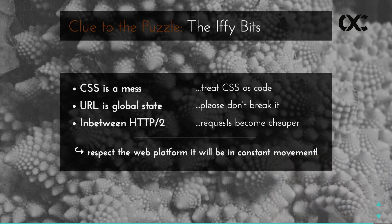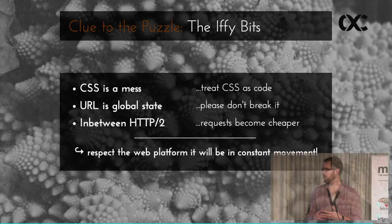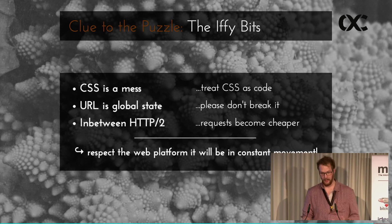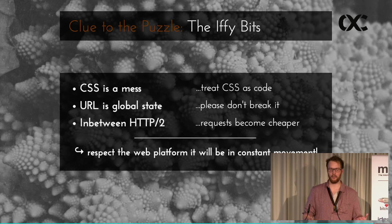There are still some iffy bits to be solved. For us it was CSS, because by its nature it's global and a bit of a mess — the cascade makes it almost impossible to say with certainty that you change some part of the application without breaking another. But by treating CSS as code and inlining it with components, you have that certainty: you change a component, tweak it, and you know that's the only place change happens. The URL is global state, but it shouldn't be broken — the URL is a key part of the web. We started to propagate it via events throughout the application, so components can react to a new URL change and can be backwards compatible with it.